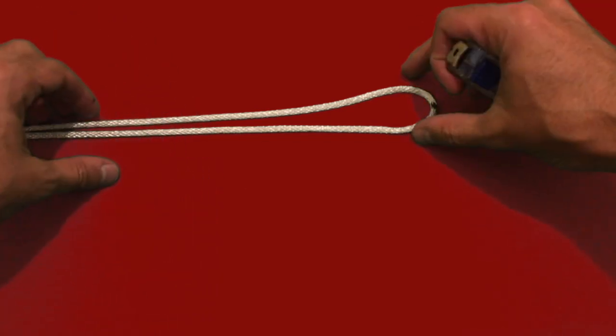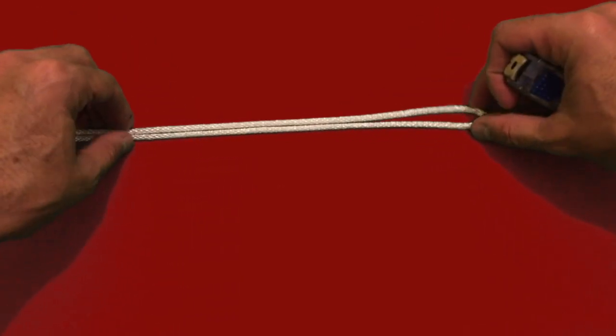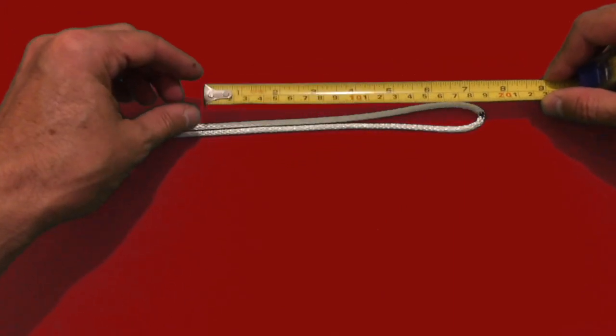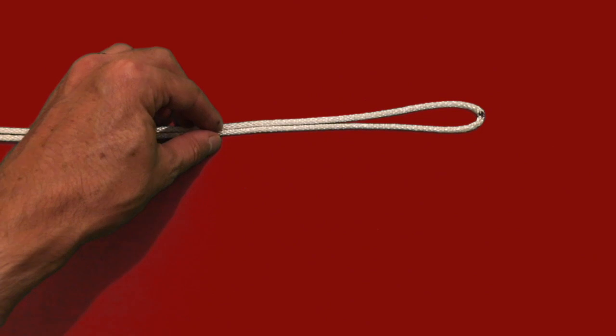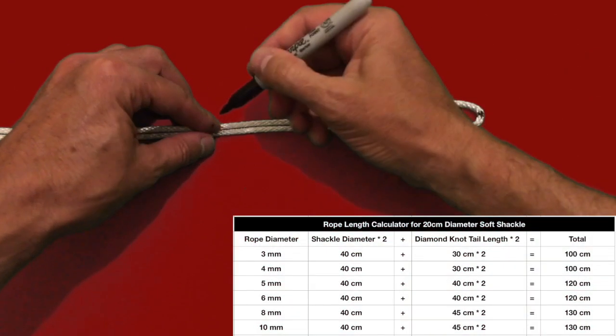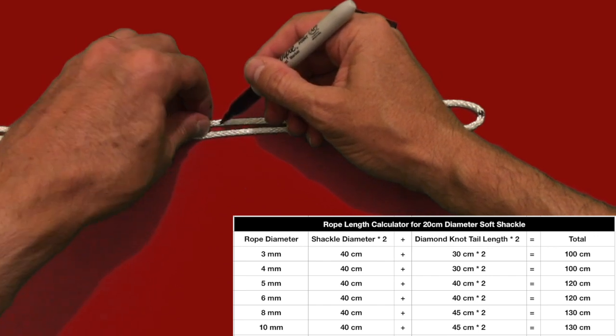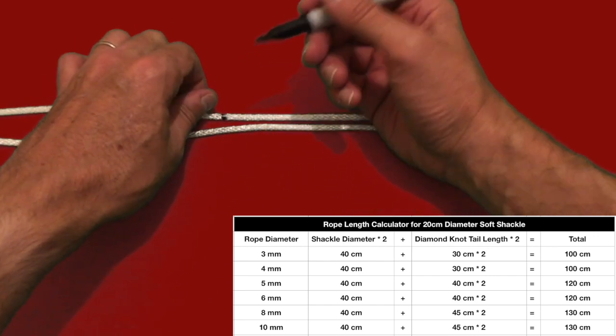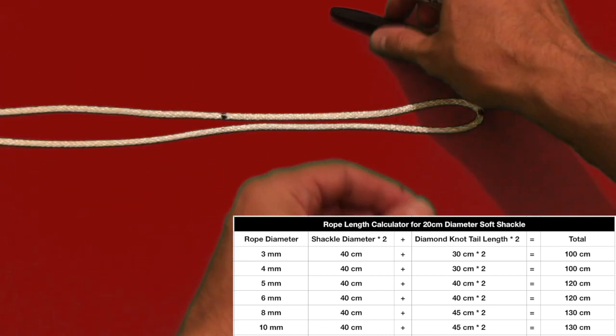You then want to create a second mark indicating the diameter of the soft shackle. In this case we're going to measure out 20 centimeters. To create this mark you want to take a quick look at the reference table I've included which helps you calculate the length of line that you will require to recreate soft shackles of various sizes with different rope diameters.